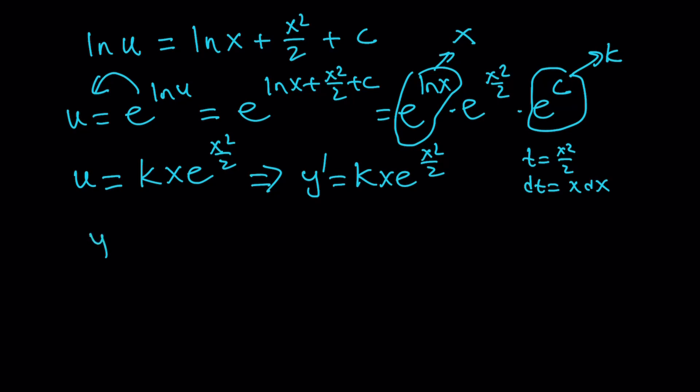Because what? Y prime is the same as xy. Therefore, you can just replace this y prime with xy. And that's going to give you xy equals k times x times e to the power x squared over two. And now I'm going to assume that x does not equal zero. Again, a lot of assumptions I'm making. I know some people are going to be mad at me. But anyways, so from here, we get the y value. And y is just going to be k times e to the power x squared over two, where k is a constant, of course.